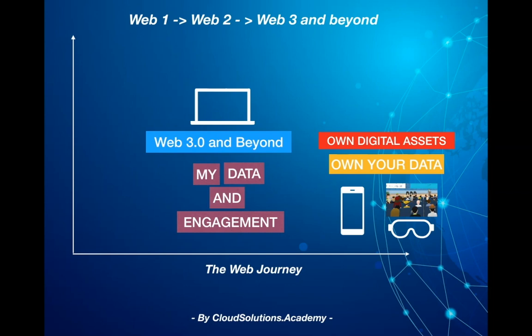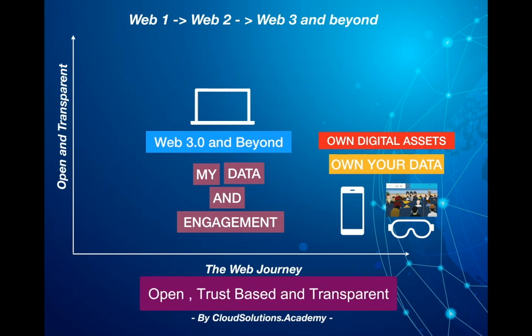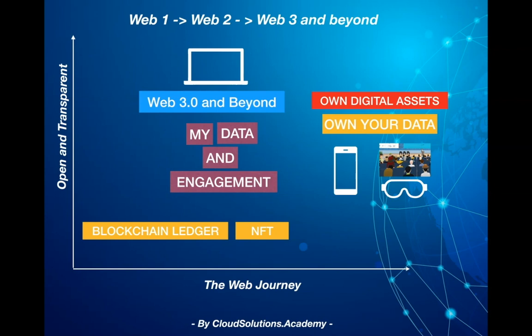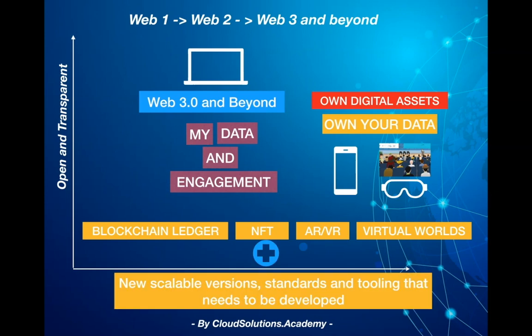As we evolve to the future versions of web, hopefully we should focus on making the web more open, trust-based and transparent. Technologies like blockchain, Ethereum, non-fungible tokens, AR/VR, and virtual worlds are currently enabling the first generation of web 3.0, but eventually we would need new scalable versions and new technology enablers to realize the vision.